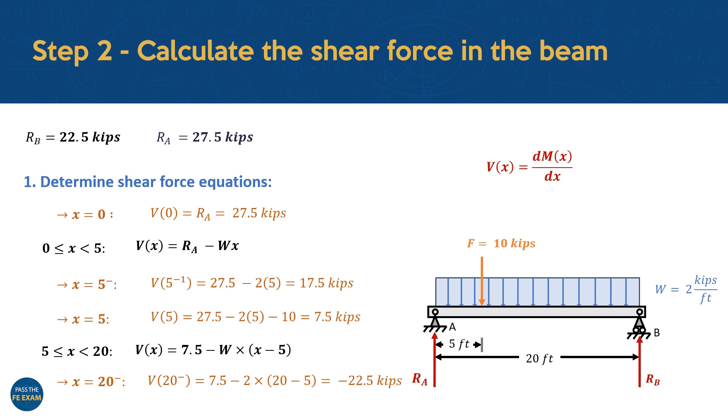We already know that the shear force in the beam is directly related to the bending moment through their derivatives. This means that the moment will reach a maximum wherever the shear is equal to zero, since that's where the slope of the moment diagram becomes flat. Let's take a look at the shear force values we've found up until now. At a distance of exactly 5 feet along the beam, the shear force is 7.5 kips. However, at 20 feet, the shear force becomes negative 22.5 kips. And this change in sign indicates that the shear force must pass through zero at some point between 5 feet and 20 feet.